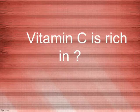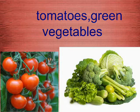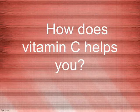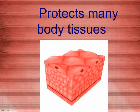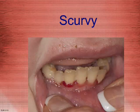Vitamin C is rich in orange, citrus fruits, cabbage, tomatoes, and green vegetables. How does vitamin C help you? It protects many body tissues. The deficiency disease caused by vitamin C is scurvy.